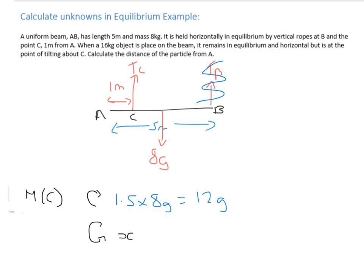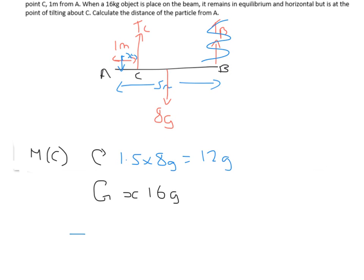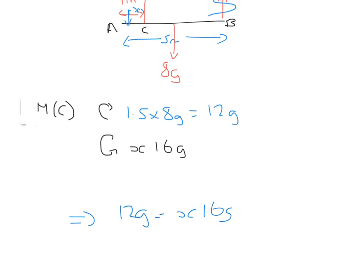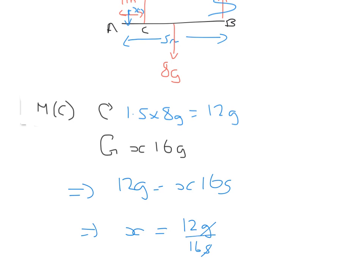And anti-clockwise we're going to have the distance from C. We don't know, but we know it's 16g. So what I'm saying is that if we're going to put the object here on the diagram, x is this distance here. And we'll have to deal with that a bit later on. So let's scroll down. So you know that 12g is equal to x times 16g.